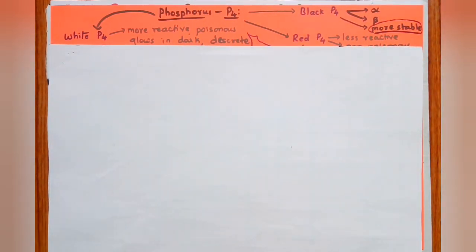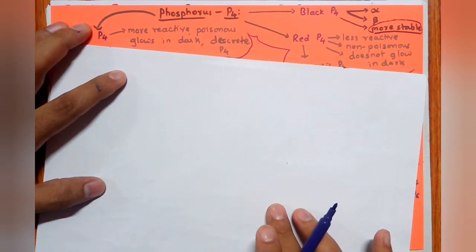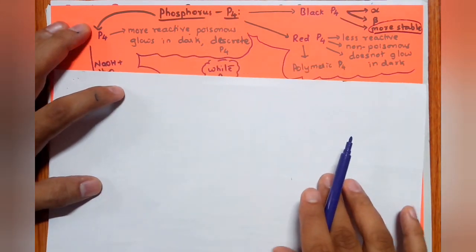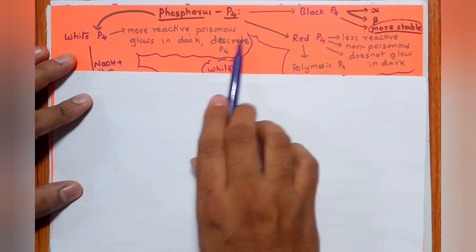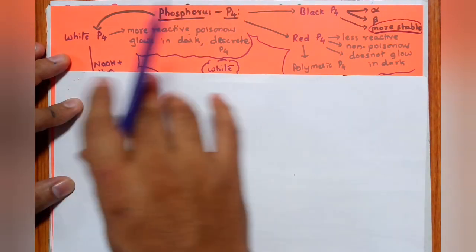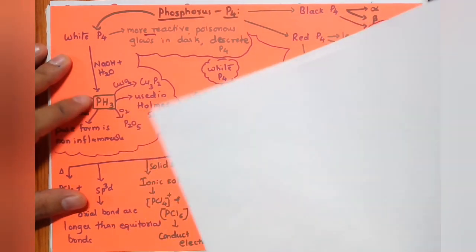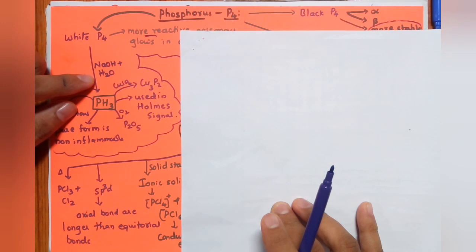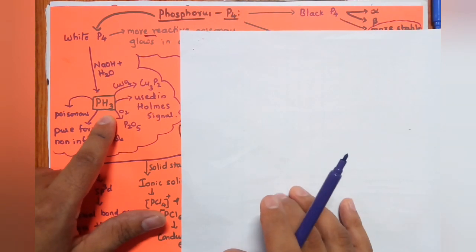Phosphorus has three allotropic forms: white, red, and black phosphorus. Black phosphorus (alpha and beta forms) is the most stable allotropic form of phosphorus. Red phosphorus is less reactive, non-poisonous, does not glow in the dark, and has polymeric P4 units. White phosphorus is more reactive, poisonous, glows in the dark, and has discrete P4 units.